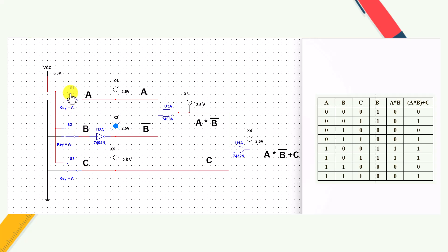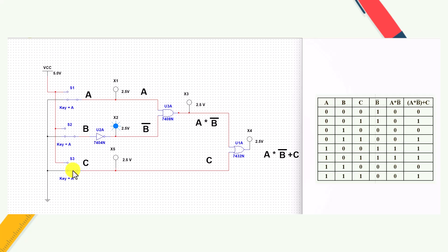Simulation: when A=0, B=0, C=0, output is 0. B̄ = 1 so the bulb does not glow. When A·B̄ = 0, the bulb does not glow. Next: A=0, B=0, C=1 - switch S3 is turned on. The bulb glows because even though A·B̄ = 0, C = 1 so the output is 1.